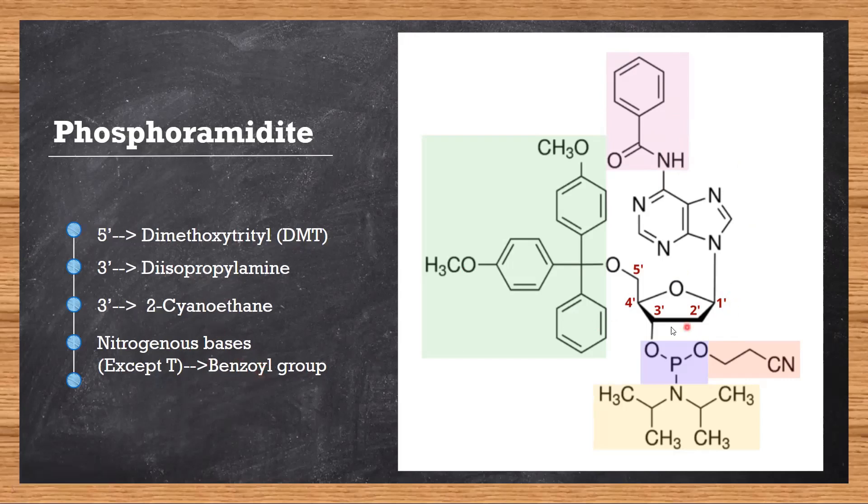Then come down to the third position. This is the position where one nucleotide is joined to the other by a 3 prime to 5 prime phosphodiester bond. So we need to protect this phosphate group as well.